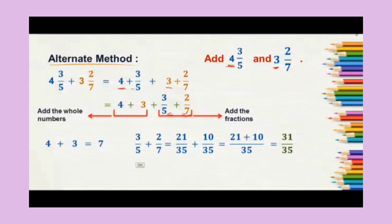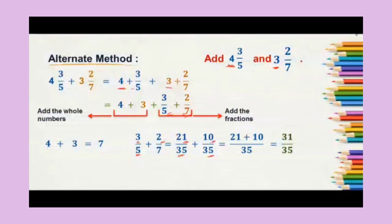Next, we make the denominators equal to 35. For 3/5: 5 times 7 is 35, so we multiply the numerator 3 by 7 as well, giving us 21. For 2/7: 7 times 5 is 35, so we multiply the numerator 2 by 5, giving us 10. We now have 21/35 and 10/35. Since the denominators are the same, we only add the numerators: 21 plus 10 equals 31. So the fraction part is 31/35.